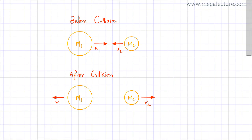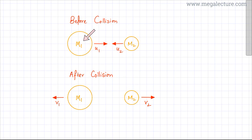We're going to discuss a perfectly elastic collision where momentum is conserved and kinetic energy is conserved. I've drawn two diagrams — one is before collision. There are two particles approaching each other and colliding: a particle with mass M1 and a particle with mass M2.